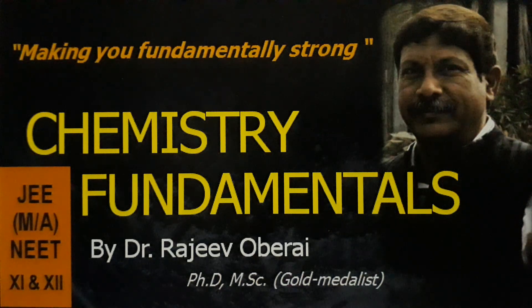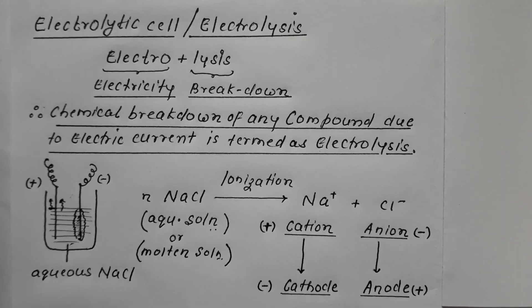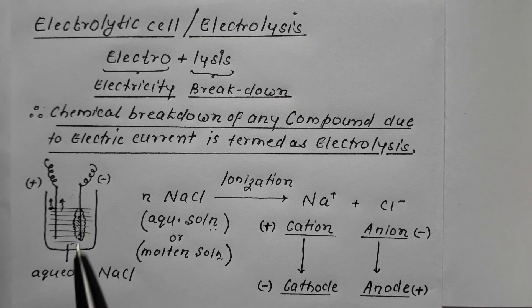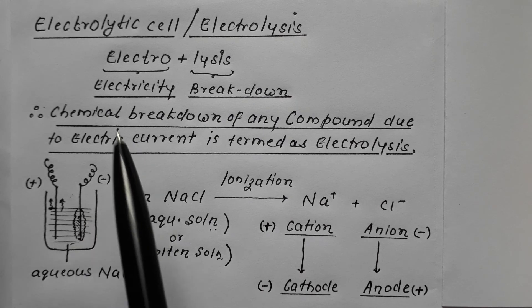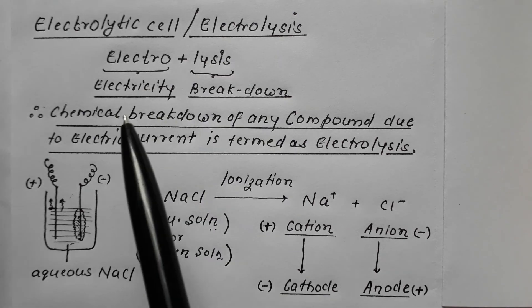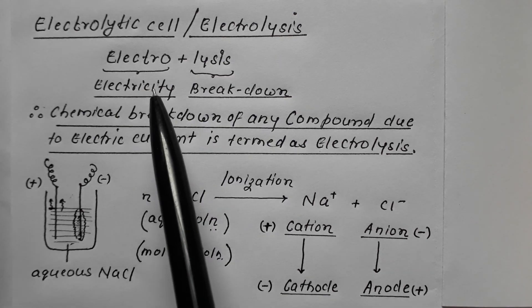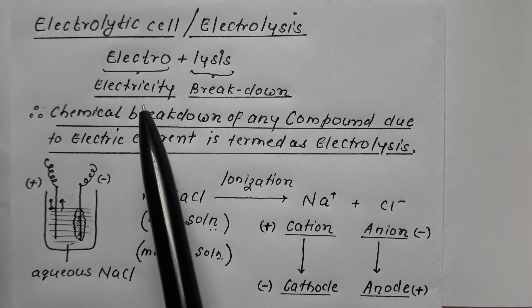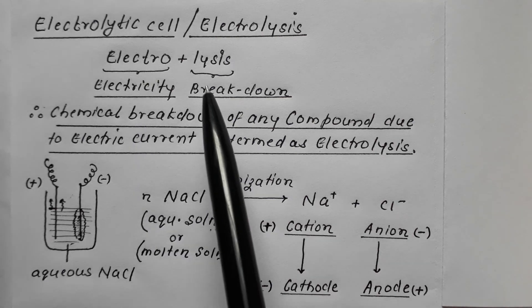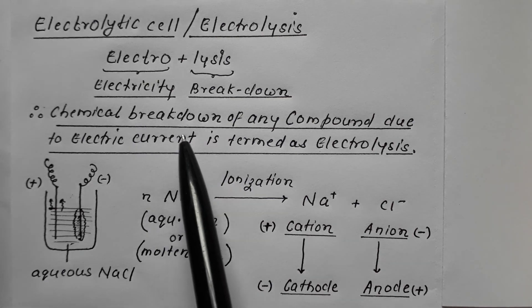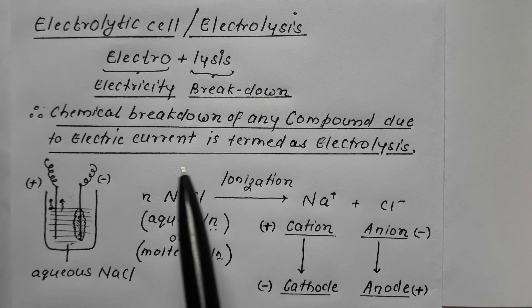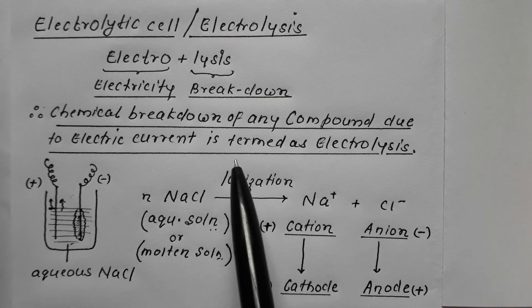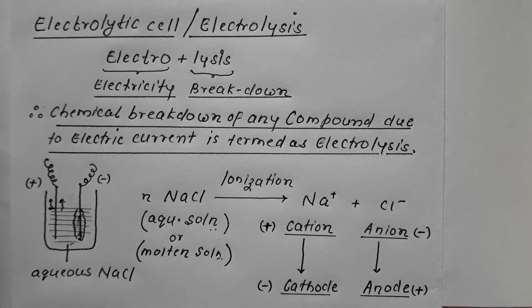Welcome dear students, I am Dr. Rajeeb Obray. In the previous video I discussed what is meant by electrolysis — let us revise this. Electrolysis is made of two words: electro and lysis. Electro comes from electricity and lysis means breakdown, so we say that chemical breakdown of any compound due to electric current is termed as electrolysis.